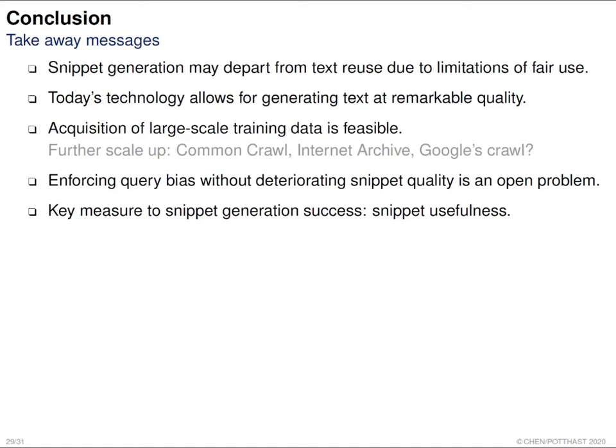Here are the take-home messages. First, reusing text as snippets may not be possible in the future. Second, using today's deep learning technologies, we can generate abstractive snippets that do not reuse text and have reasonably good quality. Third, we can acquire large amounts of training data using distant supervision. However, forcing query words into a specific position may slightly reduce fluency. It is very important to evaluate snippets in a realistic search scenario.